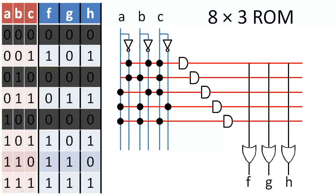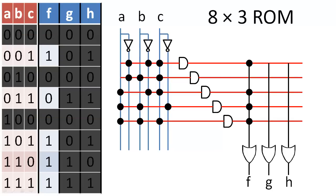As we did before, we will place dots at the intersection of rails to indicate which minterms are included in each output.